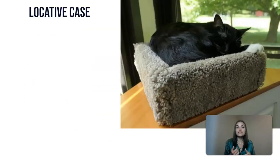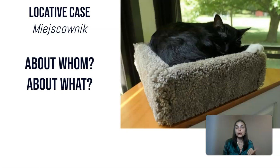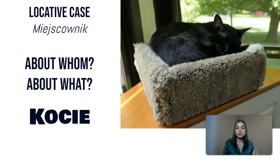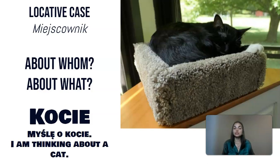Then we have the locative case — Miejscownik. It answers 'about whom' or 'about what.' The form is Kocie. Myślę o kocie — I am thinking about a cat.